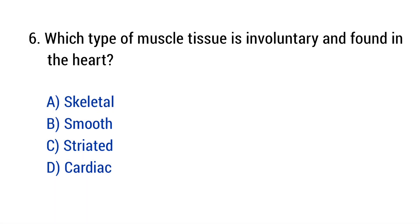Question number 6. Which type of muscle tissue is involuntary and found in the heart? The right answer is option D: Cardiac.